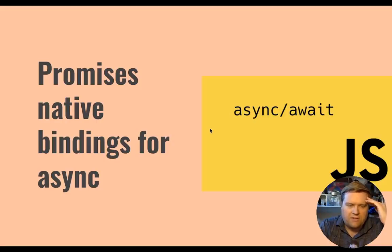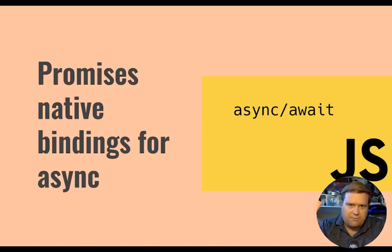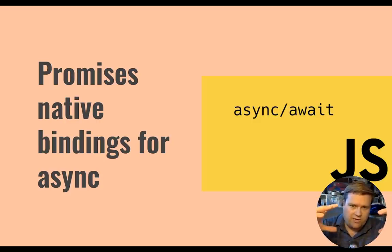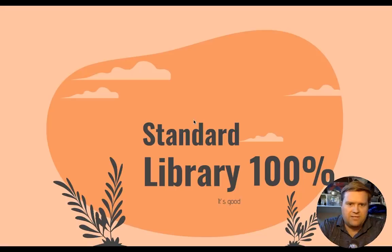One thing also is that promises have native bindings for async. Promises are kind of baked in to Deno. So instead of having to set each function with async and then await things, you can just await without putting an async function around it, which is really nice. So the default is promises with async/await.